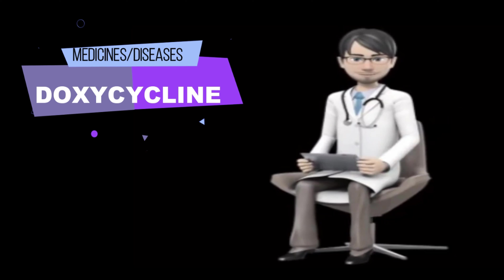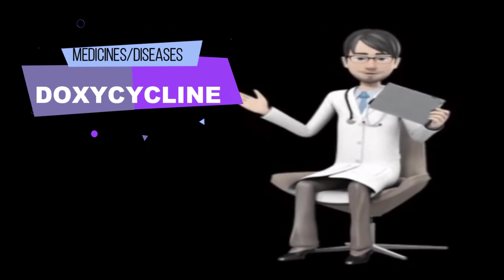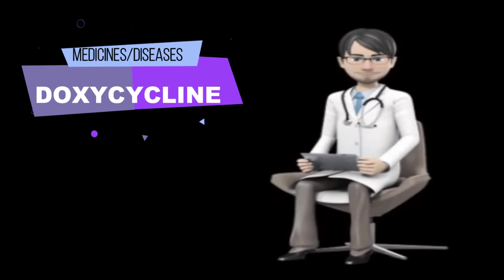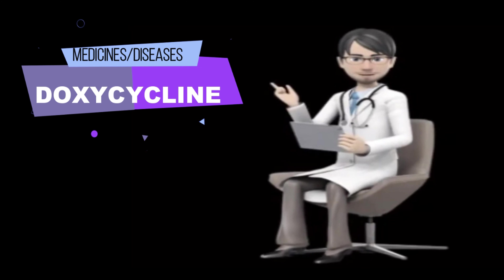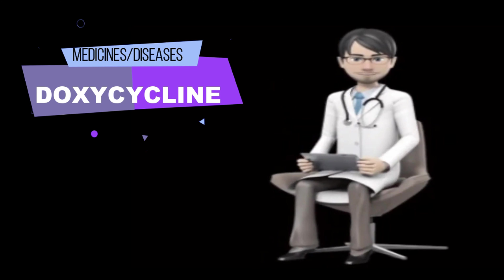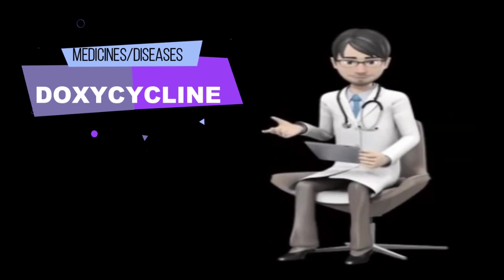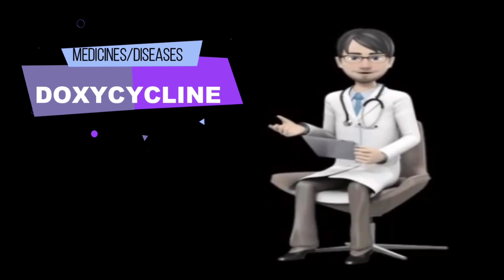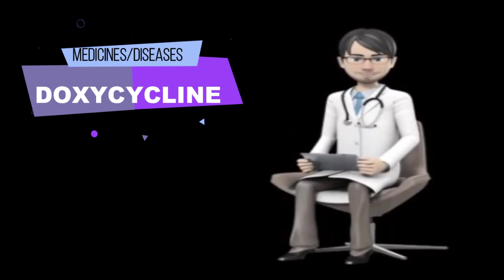Children should not use this medicine. Doxycycline can cause permanent yellowing or graying of teeth in children younger than 8 years old. Children should use this antibiotic only in cases of severe or life-threatening conditions such as anthrax or Rocky Mountain spotted fever. The benefit of treating a serious condition may outweigh any risks to the child's tooth development.